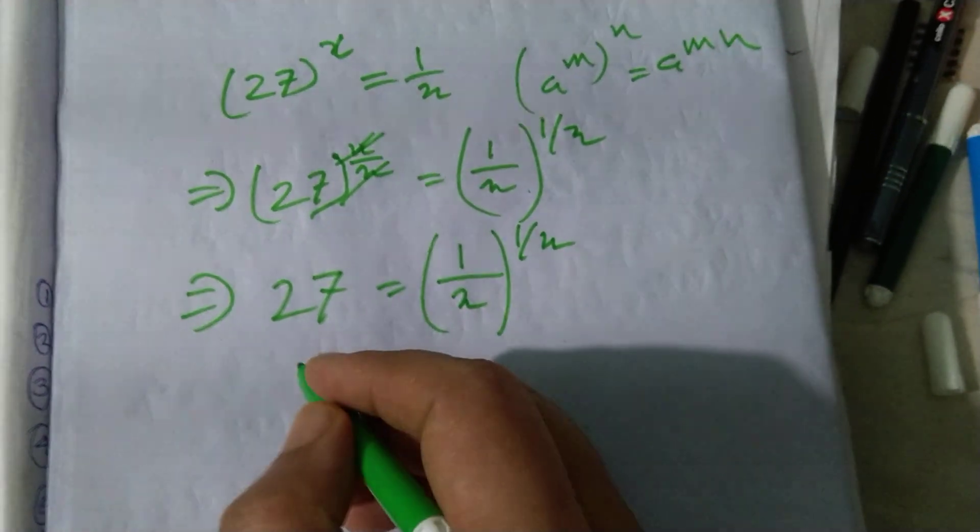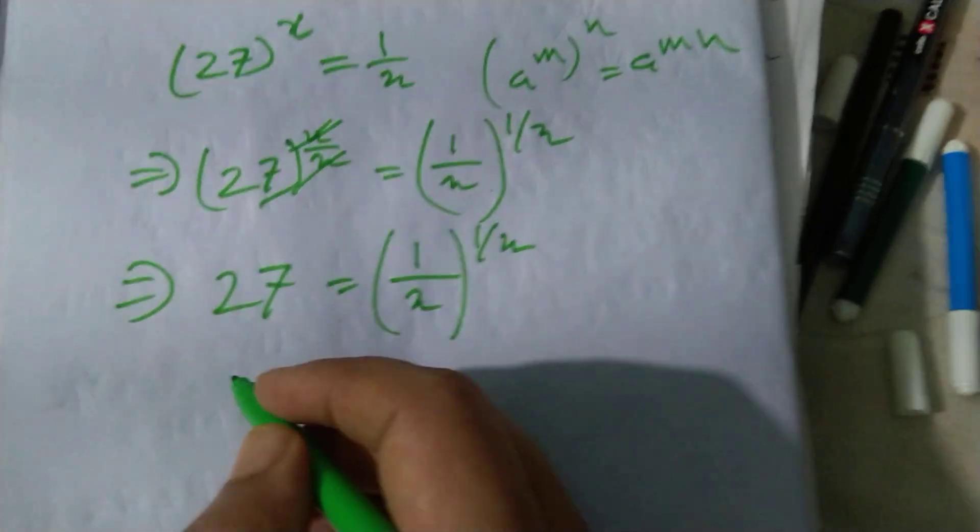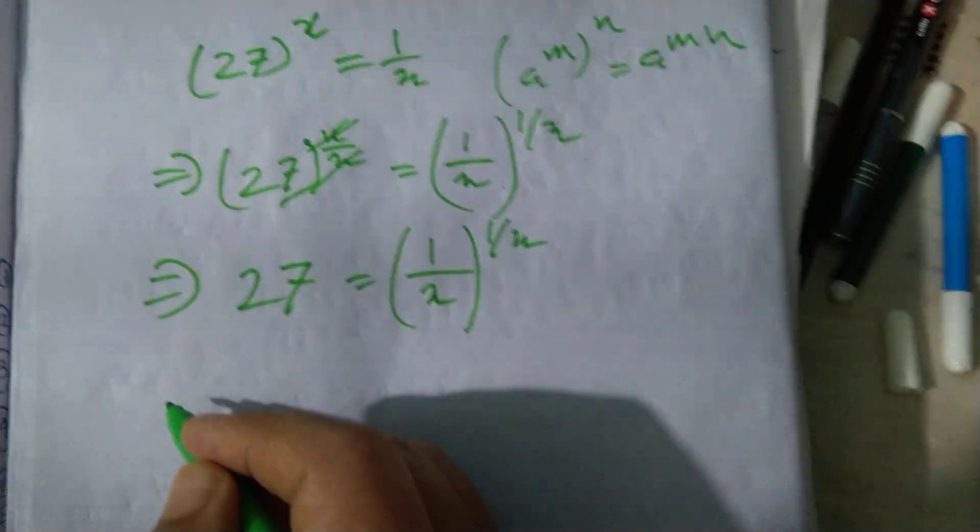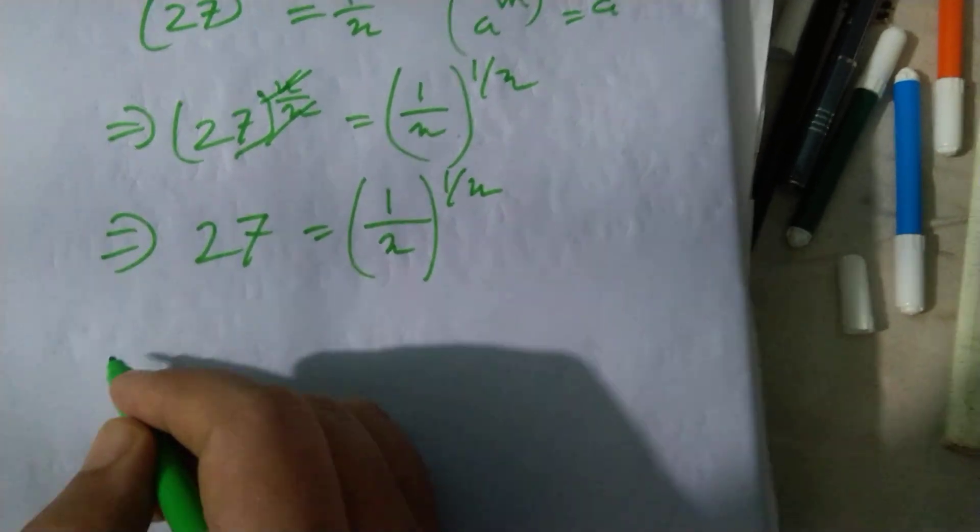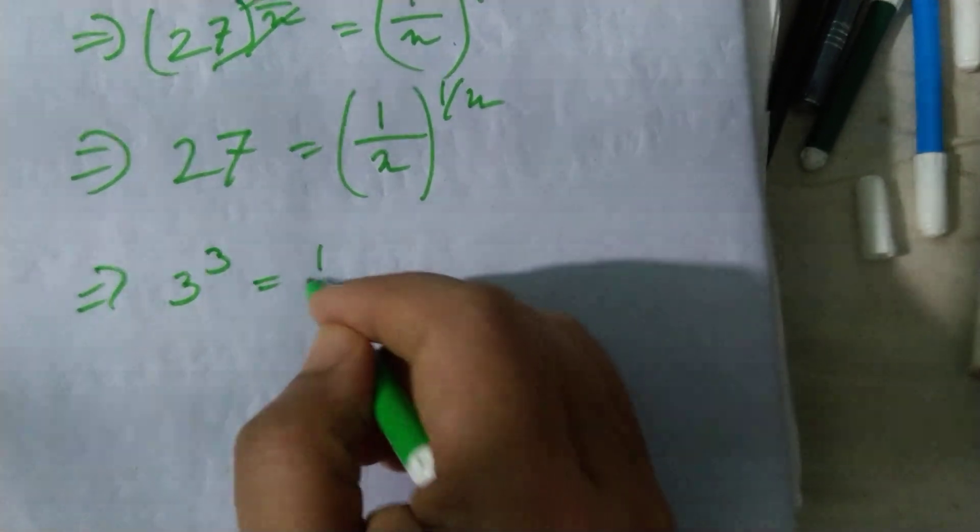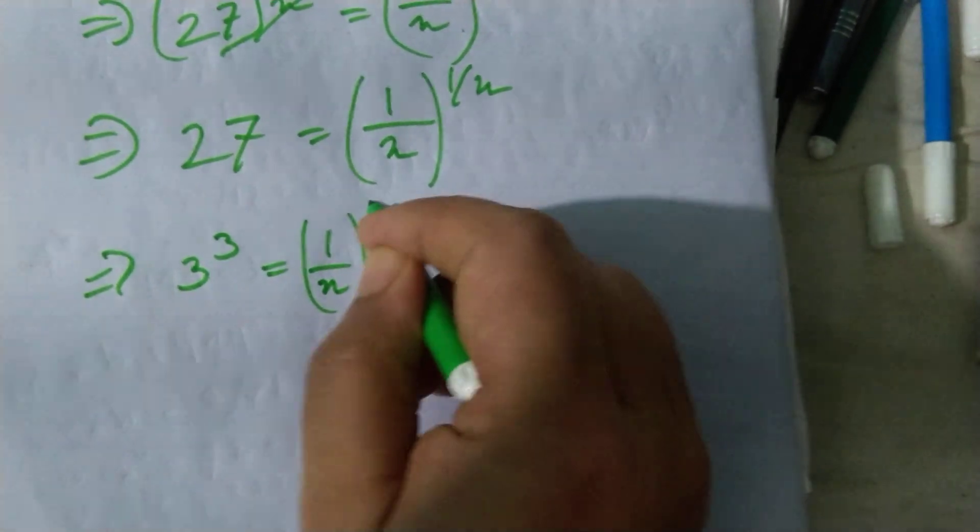Now, it can be written as 3 cubed is equal to 1 by x whole to the power 1 by x.